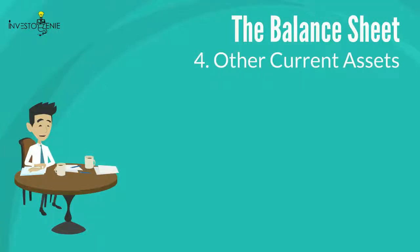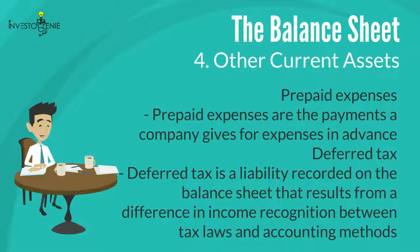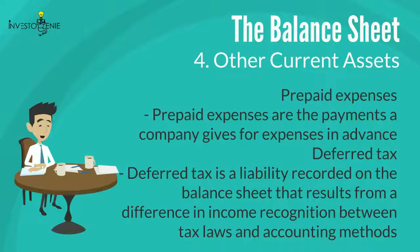Four: other current assets include other items in current assets, such as prepaid expenses and deferred income taxes. Prepaid expenses are payments a company gives for expenses in advance. Deferred tax is a liability recorded on the balance sheet that results from a difference in income recognition between tax laws and accounting methods. Both of these, if applicable, are included in other current assets.